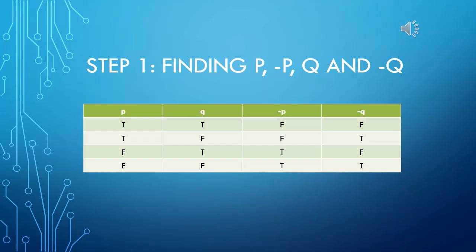Then we have negation of P which is negative P. Obviously if P is true, the negation of P would be false. And if P is false, the negation of P would be true. Same goes with negative Q.